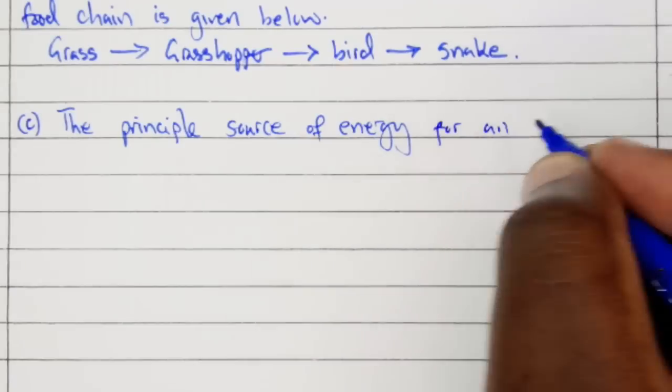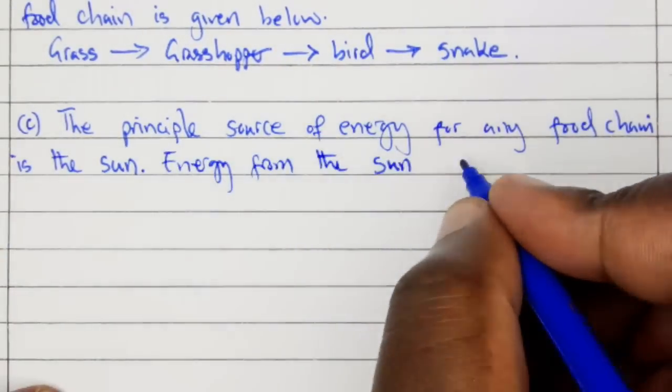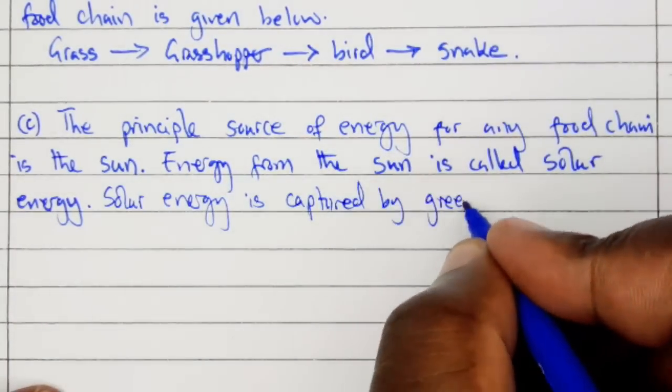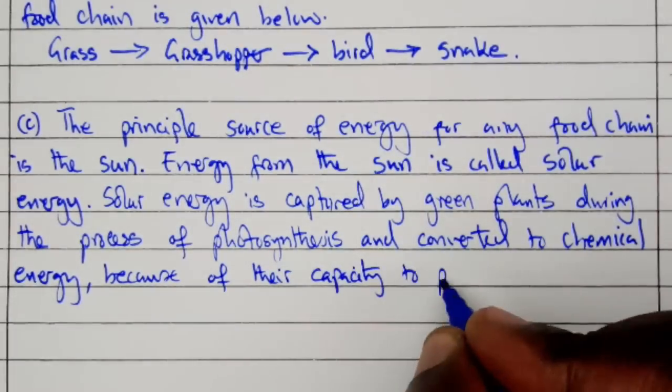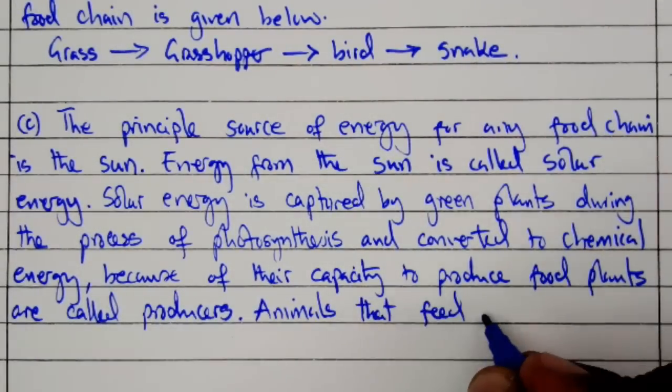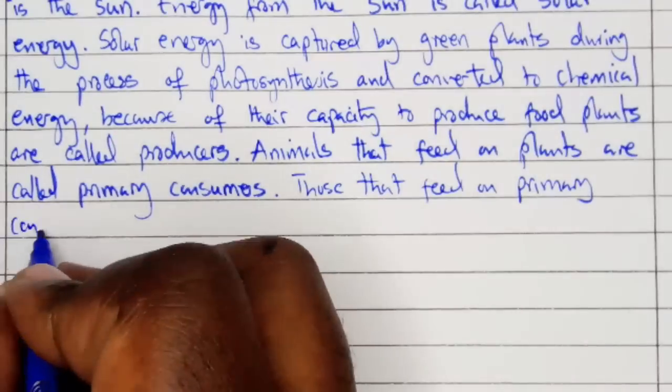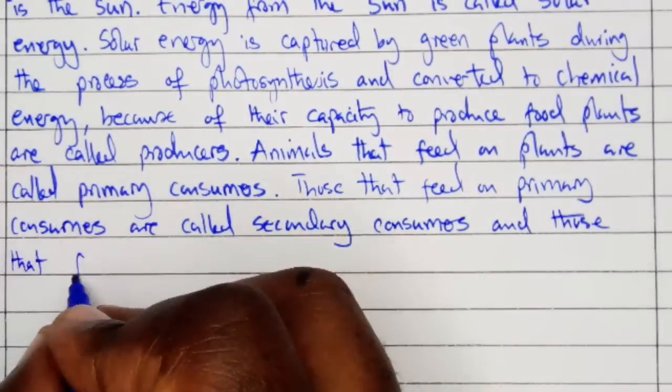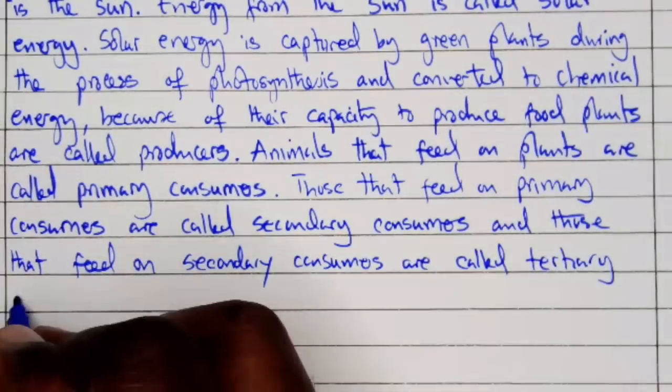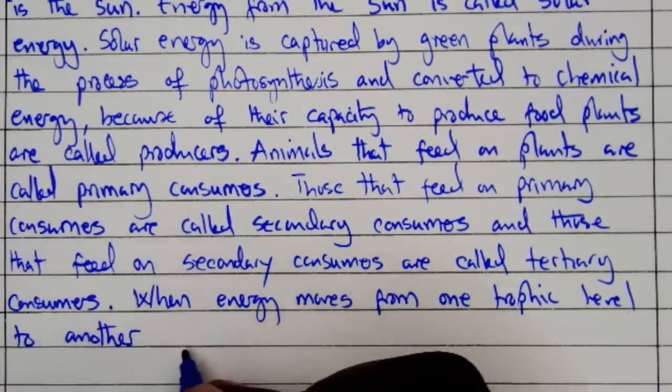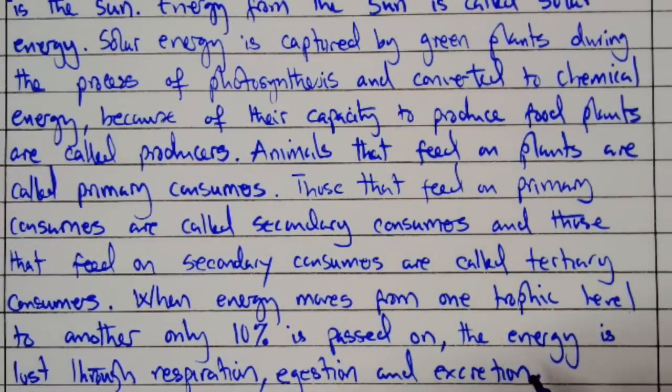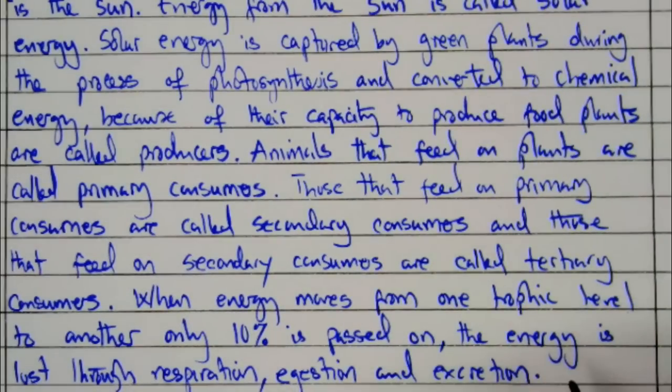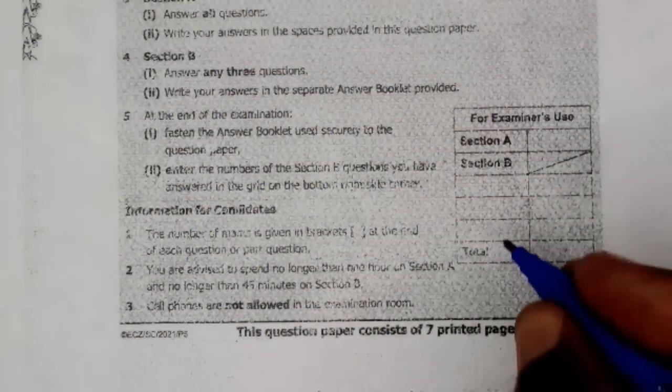Part C: The principal source of energy for any food chain is the sun. Energy from the sun is called solar energy. Solar energy is captured by green plants during the process of photosynthesis and converted to chemical energy. Because of their capacity to produce food, plants are called producers. Animals that feed on plants are called primary consumers. Those that feed on primary consumers are called secondary consumers. And those that feed on secondary consumers are called tertiary consumers. When energy moves from one trophic level to another, only 10% of the energy is passed on. The energy is lost through respiration, egestion, and excretion. These were the solutions to question number 10.